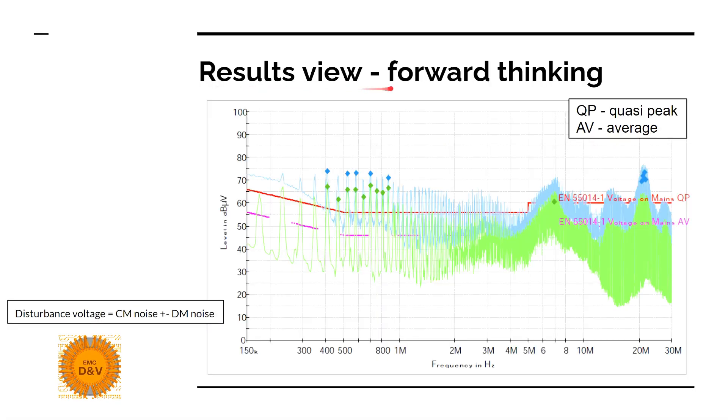Results view forward thinking. What you want to achieve is lower noise than the limits specified in the EMC standards for your device. Noise is measured in dBµV versus frequency and is usually from 150 kHz to 30 MHz. On the chart, you have two types of envelope for the peak detector and the average detector, which is usually used for narrowband emissions. The quasi-peak limits will always be higher than the average limits.